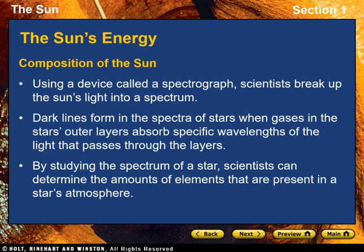Composition of the Sun: Scientists break up the sun's light into a spectrum — the plural being spectra — by using a device called a spectrograph. Dark lines form in the spectra of stars when gases in the star's outer layers absorb specific wavelengths of light passing through those layers. The temperature of these outer layers determines which gases produce visible spectral lines. By studying the spectrum of a star, scientists can determine the amounts of elements present in the star's atmosphere.